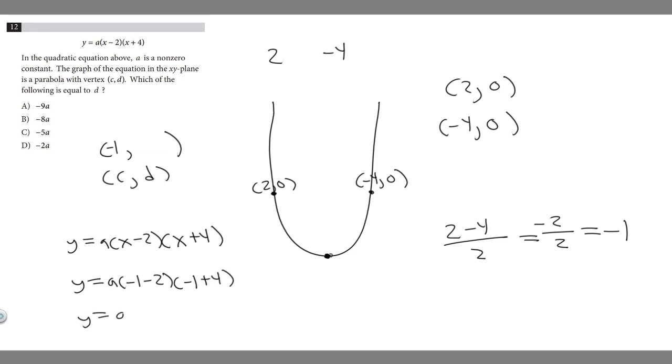So y = a, and -1-2 is -3. Then -1+4 is 3. So 3 times -3 is -9, and then we're multiplying by a.